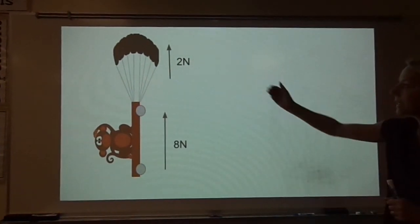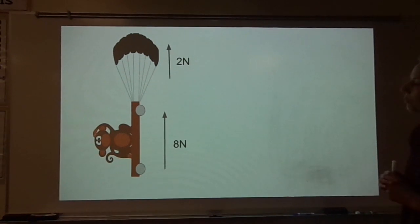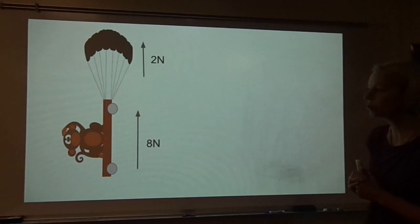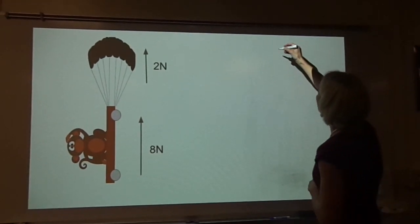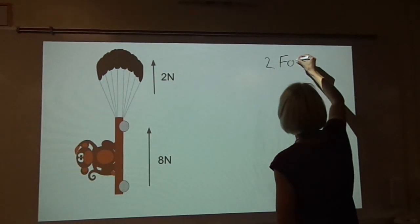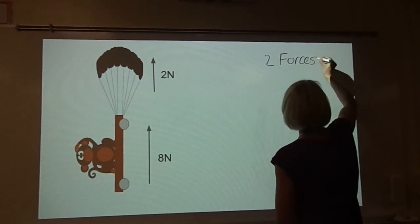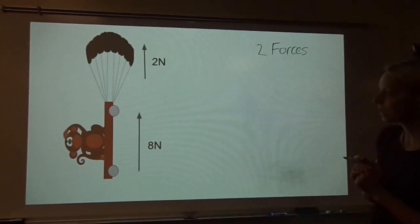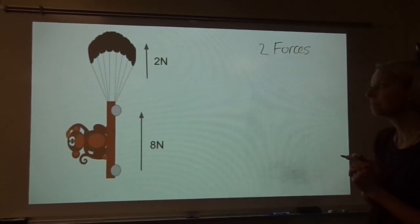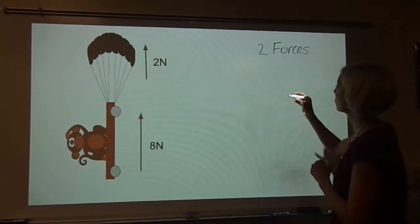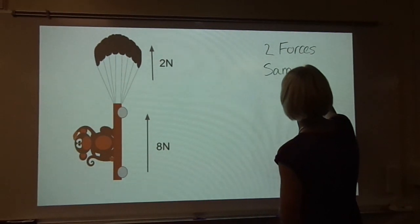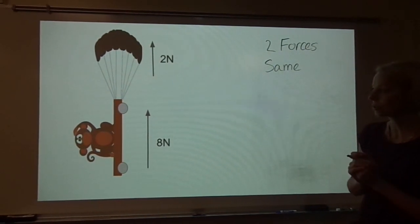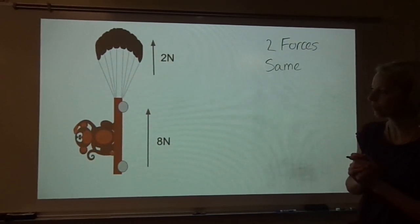What do we have going on here? Let's think: how many forces do we have acting on our monkey parachute? I'm sure you identified two forces. Next, we will ask ourselves: what direction are the forces acting in — the same direction or opposite directions? They are acting in the same direction. When forces are acting in the same direction, you will add the forces in order to determine the net force.